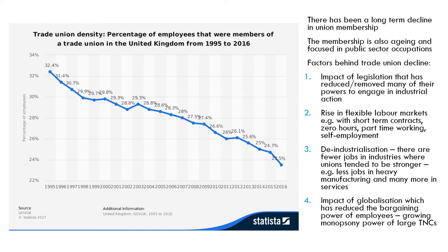The rise in flexible labour markets — things like short-term contracts, zero-hour contracts, part-time working, and self-employment — means it's less likely that people are part of a union. We've also seen de-industrialisation, as service sectors tend to have less union membership traditionally than the heavy industry seen in the past.